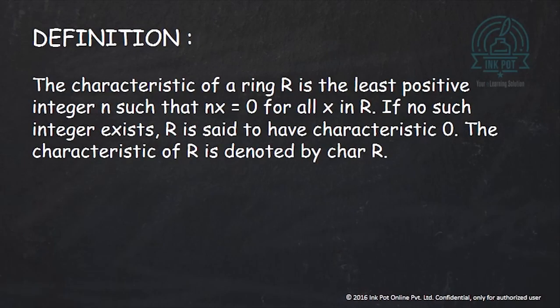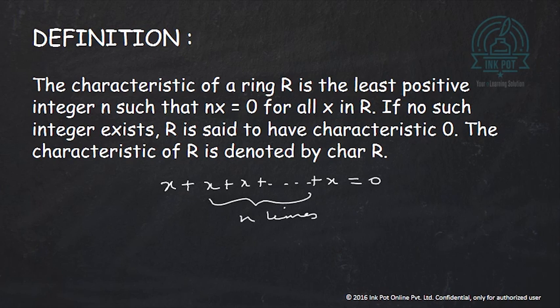Consider a ring R. The characteristic of R is the least positive integer n such that nx equals 0 for all elements x in R. This means x plus x plus x added n times is 0, and this holds true for all elements x in R. Here n is the least positive integer that satisfies this condition. Now, it is quite possible that for a ring no such integer exists, and that ring is said to have characteristic 0.